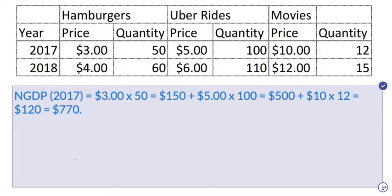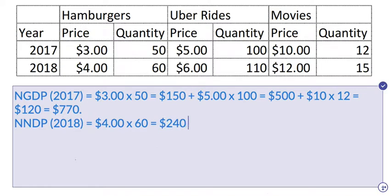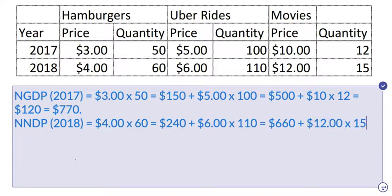Now let's calculate nominal GDP for the next year, 2018 — same approach, only using 2018's quantities times 2018's prices. So it is $4 times 60, which equals $240. Then we add $6 for the Uber rides times 110, which equals $660. Finally, we add the price of movies: $12 times 15 equals $180. So that comes to $240 plus $660 is $900, plus $180, giving us $1,080.